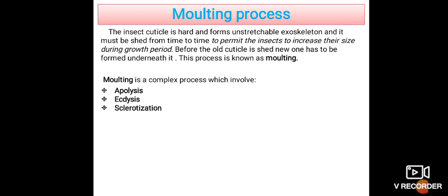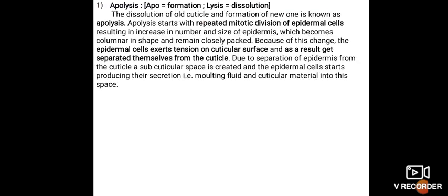Moulting is a complex process which involves Apolysis, Ecdysis, and Sclerotization. So, Apolysis: apo means formation and lysis means dissolution. The dissolution of old cuticle and formation of new one is known as Apolysis.